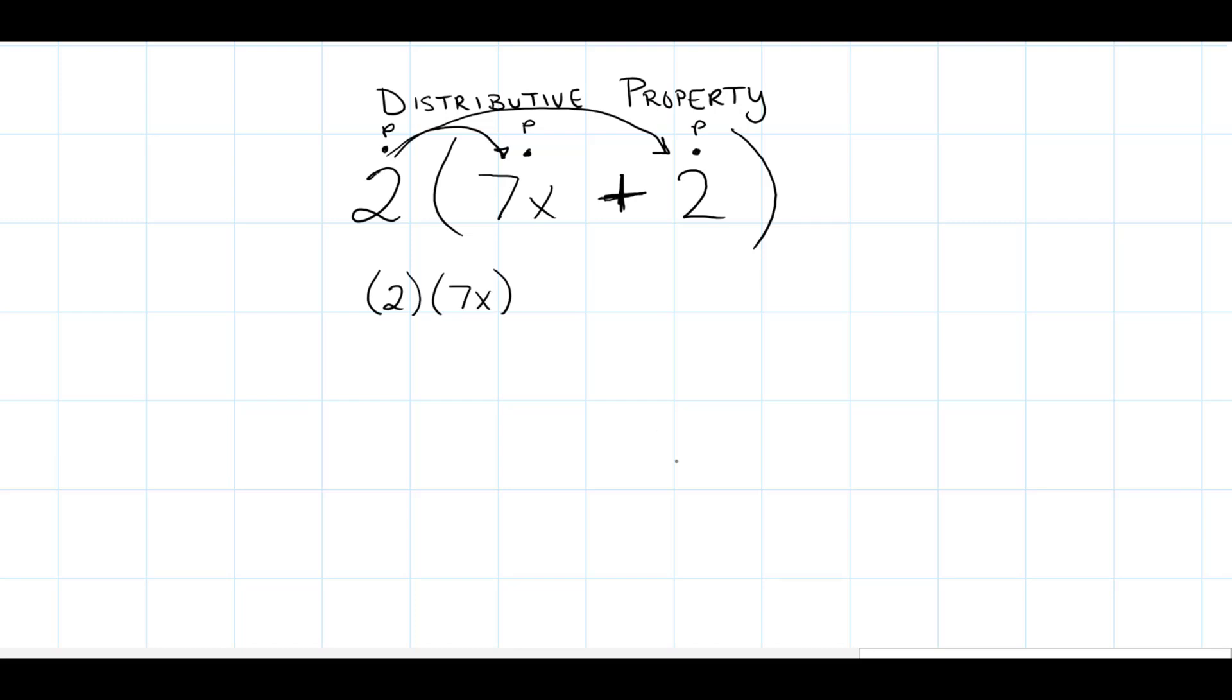Each of these terms are positive, and let's write out the multiplication problem that we're going to have. We are going to take the two that's outside the parentheses and multiply it by 7x. Then we're going to get that answer for that term and combine it with 2 times the term inside the parentheses, which is also positive 2.